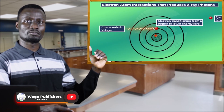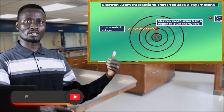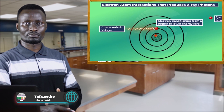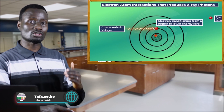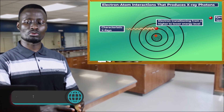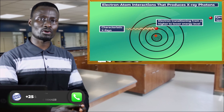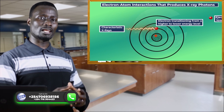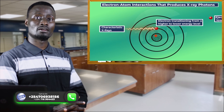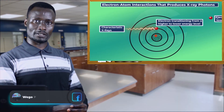The energy change involved produces what is called characteristic X-rays, due to electron transition from a higher energy level to a lower energy level. This is brought about by the electron that has been ejected from the inner shell by the electron directed to the metal target.